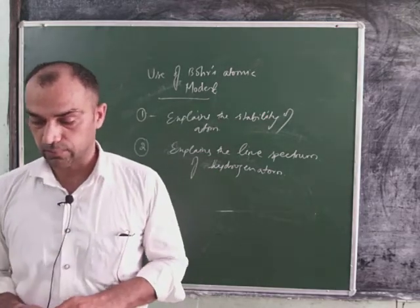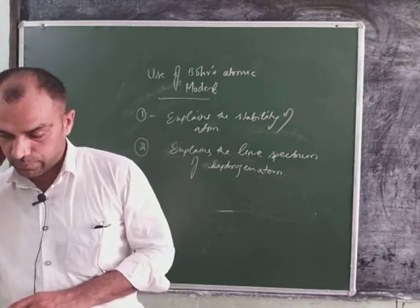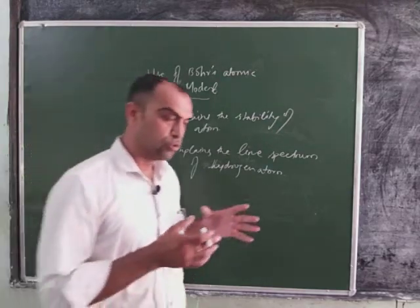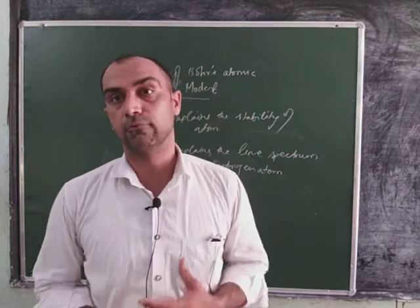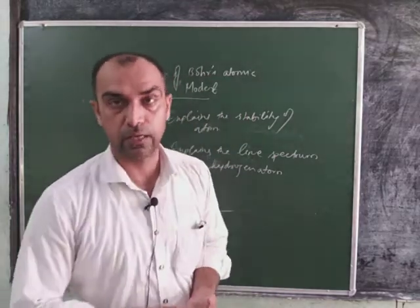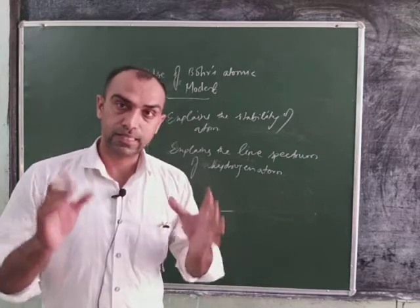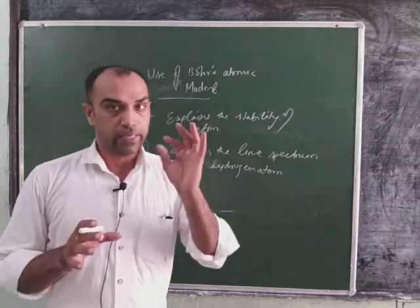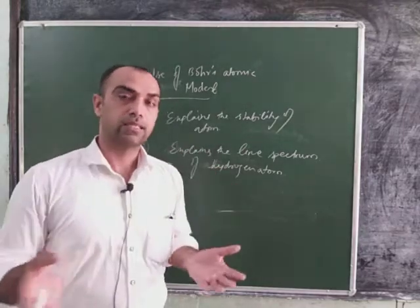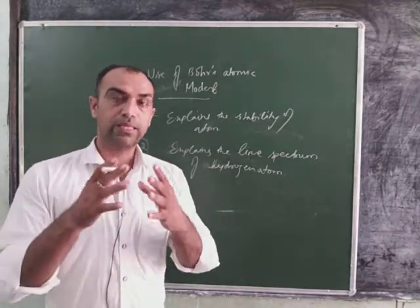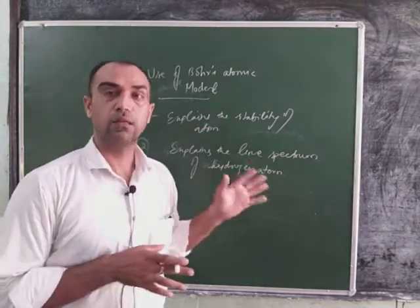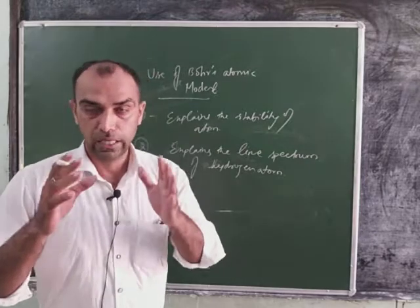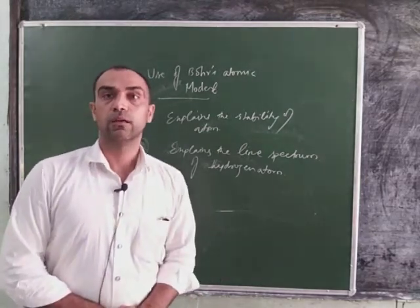Then another one you can take here is that the line spectrum was related to our hydrogen-like other atoms in which a single electron, like Li positive, helium 2 positive, in this way, where there is one electron, which is like the ions which are like hydrogen, its own spectrum was given here. These two are the basic and the biggest usefulness which we have seen in Bohr's atomic model.